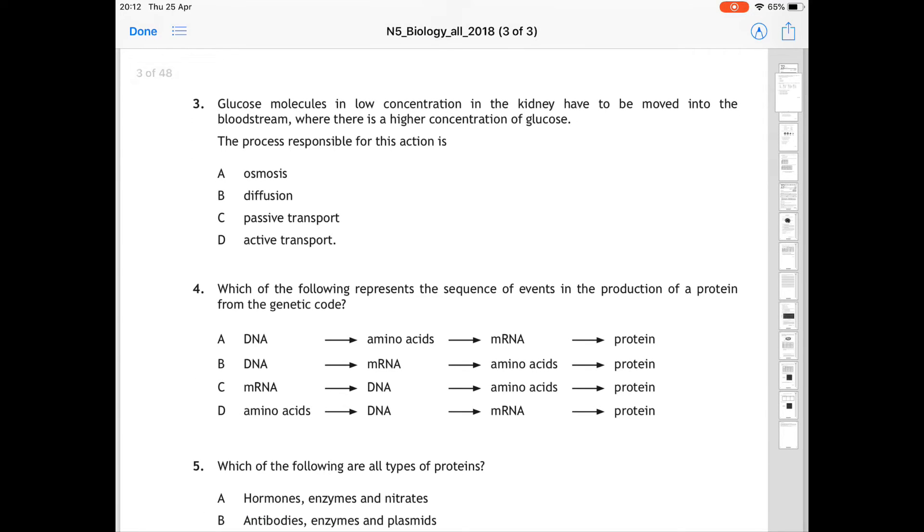For question 3, glucose molecules in low concentration in the kidney have to be moved into the bloodstream, where there is a higher concentration of glucose. The process responsible for this action is, and it gives you some examples of transport across the membrane. If we look back through this question here, it says glucose molecules in a low concentration have to move into the bloodstream, where there is a high concentration. So a movement from low to high is against or up a concentration gradient, which is active transport, which is D.